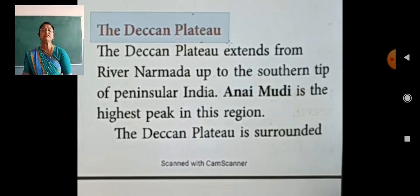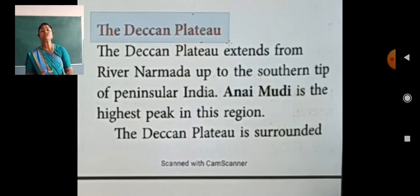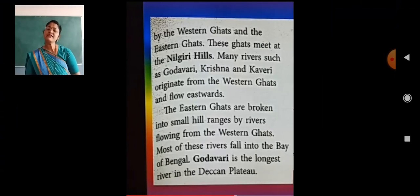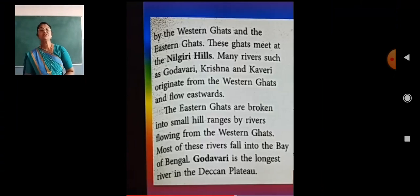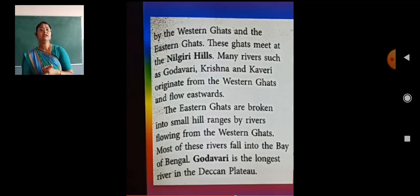Anahimuri is the highest peak in this range of the southern Deccan Plateau. The Deccan Plateau is surrounded by the Western Ghats and the Eastern Ghats on both sides.